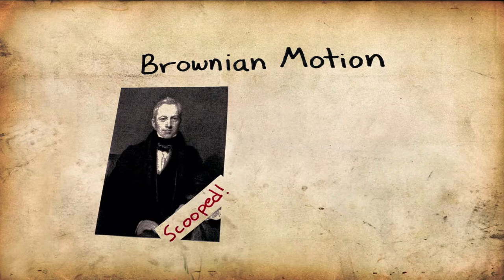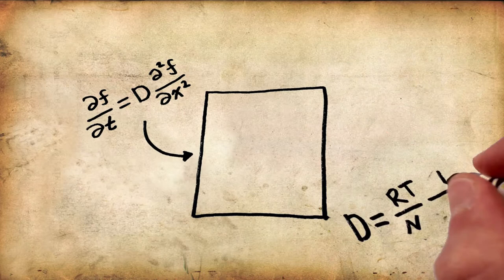But he did draw the conclusion that the mathematical description of Brownian motion is evidence for the existence of atoms, even if you can't see them directly. And then he cleverly derived how big atoms should be based on how much the Brownian particles move.